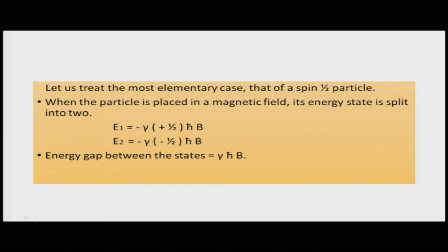For the most elementary case — a spin-1/2 particle — there are two possibilities (2×½+1 = 2). When placed in a magnetic field, the energy state splits into two: E₁ = -γ(+½)ℏB and E₂ = -γ(-½)ℏB. The energy gap between these states is therefore γℏB. For spin-up (α state) the energy is lowered; for spin-down (β state) it is raised, with no separation when no field is applied.